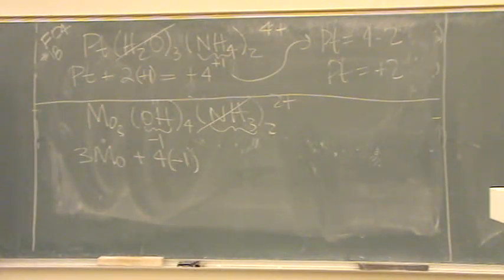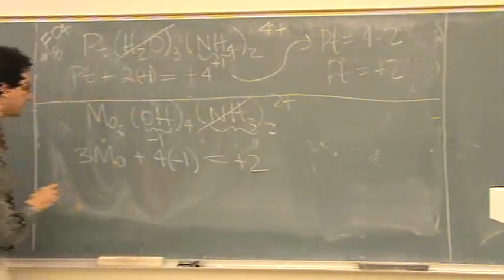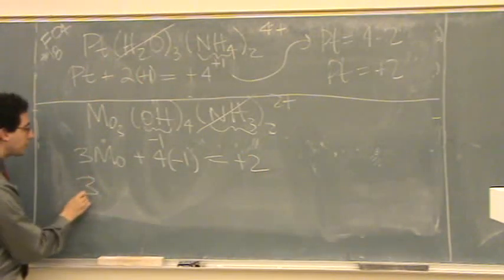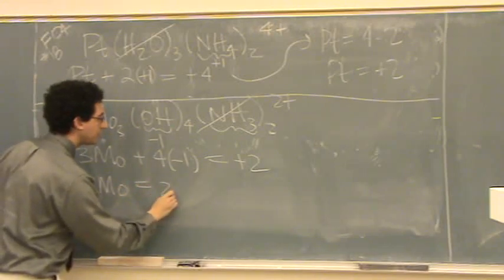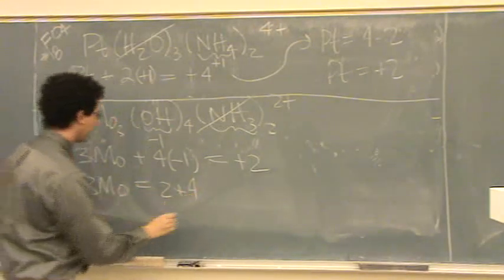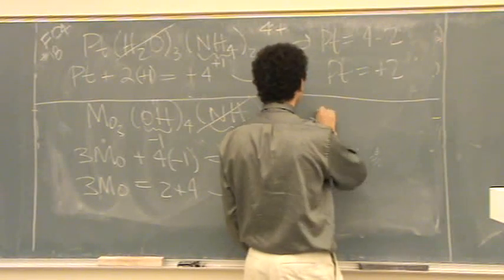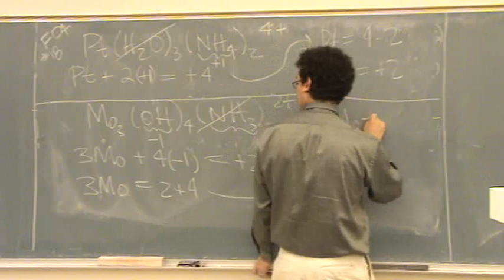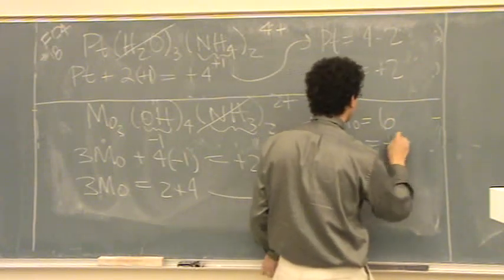And if you want to, you could say two ammonias at zero, but that's just going to be zero, equals the overall charge of plus two. So you'll say three mollys equals two plus four, or three mollys equals six, or molly equals plus two.